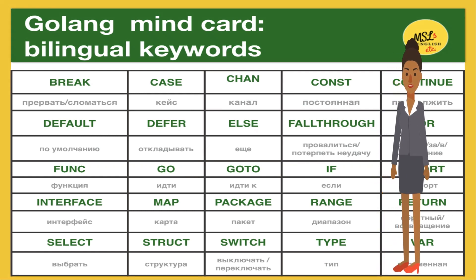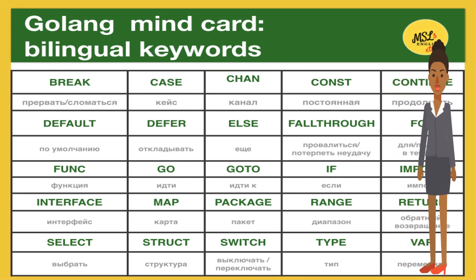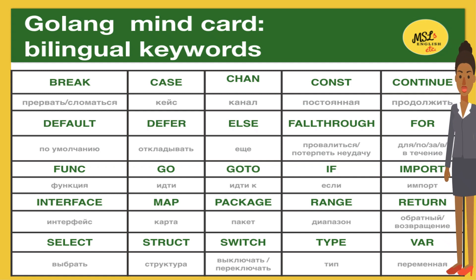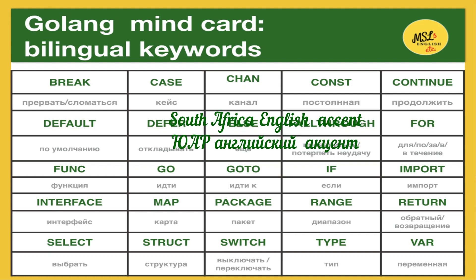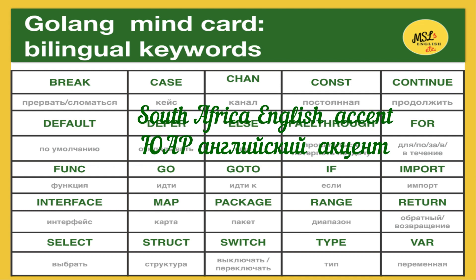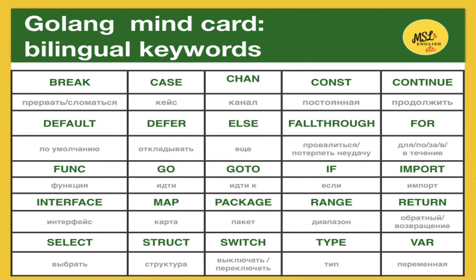Hi guys, I'm Tessa. Let's get started to repeat 25 keywords of the Go language with my South African English accent. Break. Case. Chan. Constant. Continue. Default. Defer. Else. Fallthrough. For. Func. Go. Goto. If. Import. Interface. Map. Package. Range. Return. Select. Struct. Switch. Type. Var.